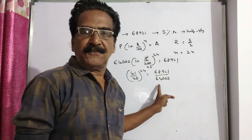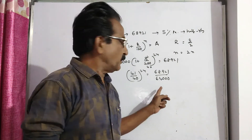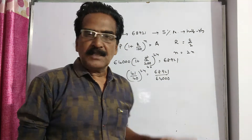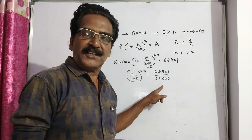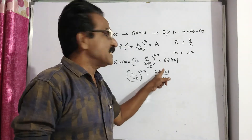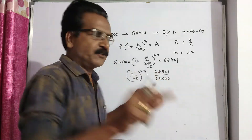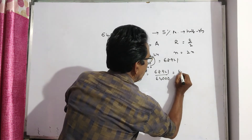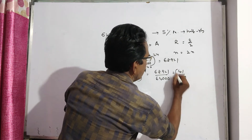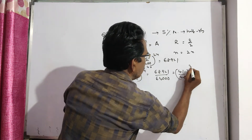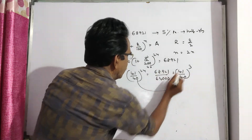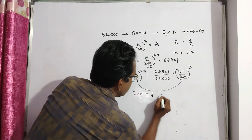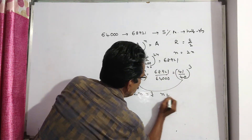Looking at the denominator, 64,000 is 40 cubed. So the numerator must be 41 cubed. Therefore (41/40)^2n = (41/40)^3. Since bases are equal, powers are equal: 2n = 3, so n = 3/2, or 1 and a half years.